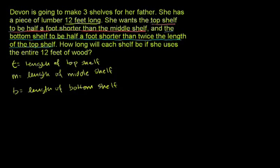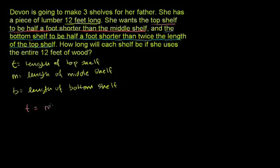Looking at the first statement: she wants the top shelf to be half a foot shorter than the middle shelf. So the length of the top shelf is equal to the length of the middle shelf minus 1/2 foot. That's what that sentence is telling us — the top shelf needs to be half a foot shorter than the length of the middle shelf.